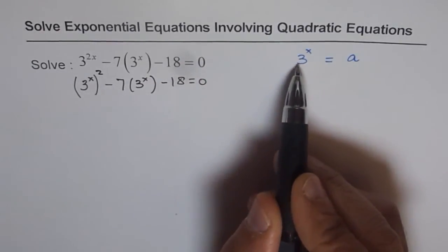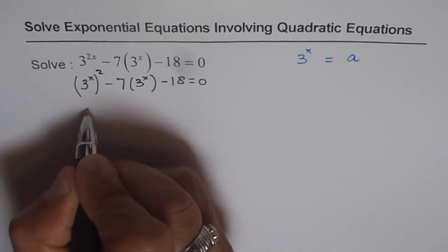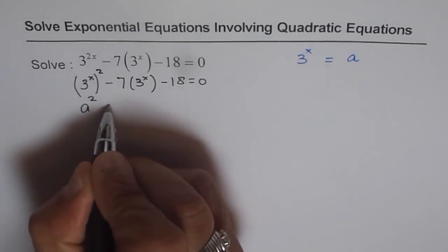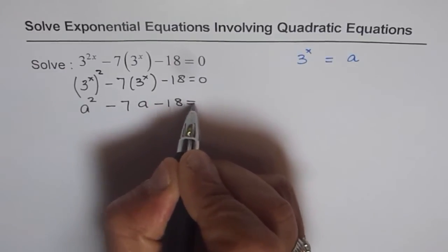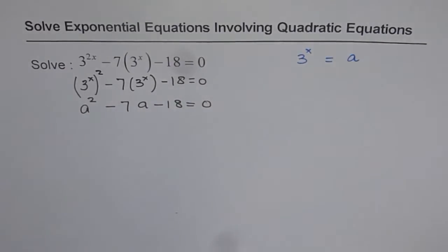Now, if I replace 3 to the power of x with a, I get a quadratic equation in a, which is a squared minus 7a minus 18 equals 0. You see that.